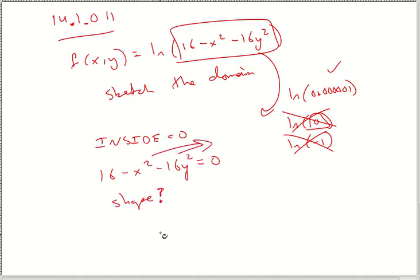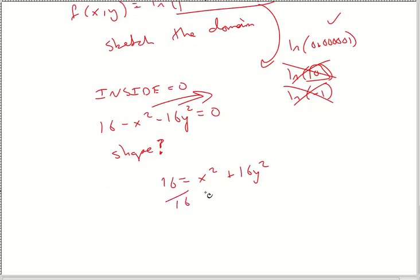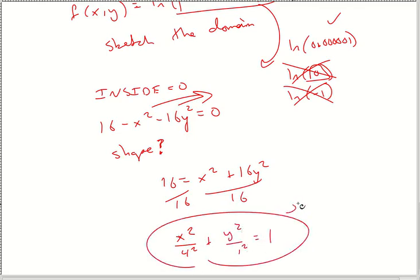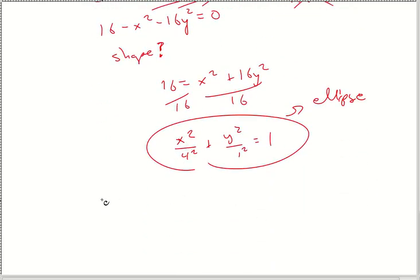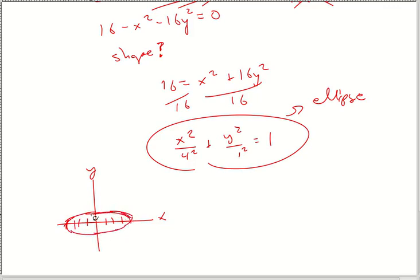Moving terms over: 16 equals x squared plus 16y squared. It looks kind of like a circle. Dividing by 16 on both sides: x squared over 4 squared plus y squared over 1 squared equals 1. That's an ellipse with x as the major axis. Plotting points at x = ±4 and y = ±1, you get your ellipse. We tested the point (0,0) — it gives ln 16, which works. The point (0,2) gives ln of a negative number, which doesn't work. So inside is good, outside is bad.